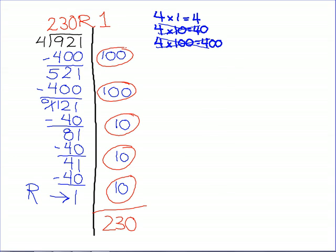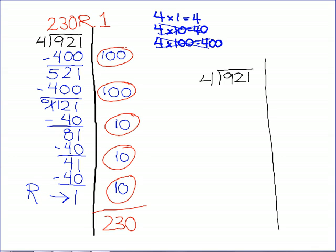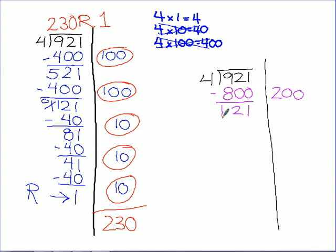Now I suspect, as some people were working on this problem, they wanted to save themselves some time. I have a sneaking suspicion that some people saved themselves some time by doing this problem a little differently. They still thought 4 times 1 is 4, 4 times 10 is 40, 4 times 100 is 400 — but instead of taking out 400 and then another 400, some people took out 800 right from the start, because they knew if 100 fours makes 400, then 200 sets of four makes 800. So as I was walking around, I noticed some people did 200 — that's a great way of saving yourself some time. Now I've cut out a step and I'm down to 121.